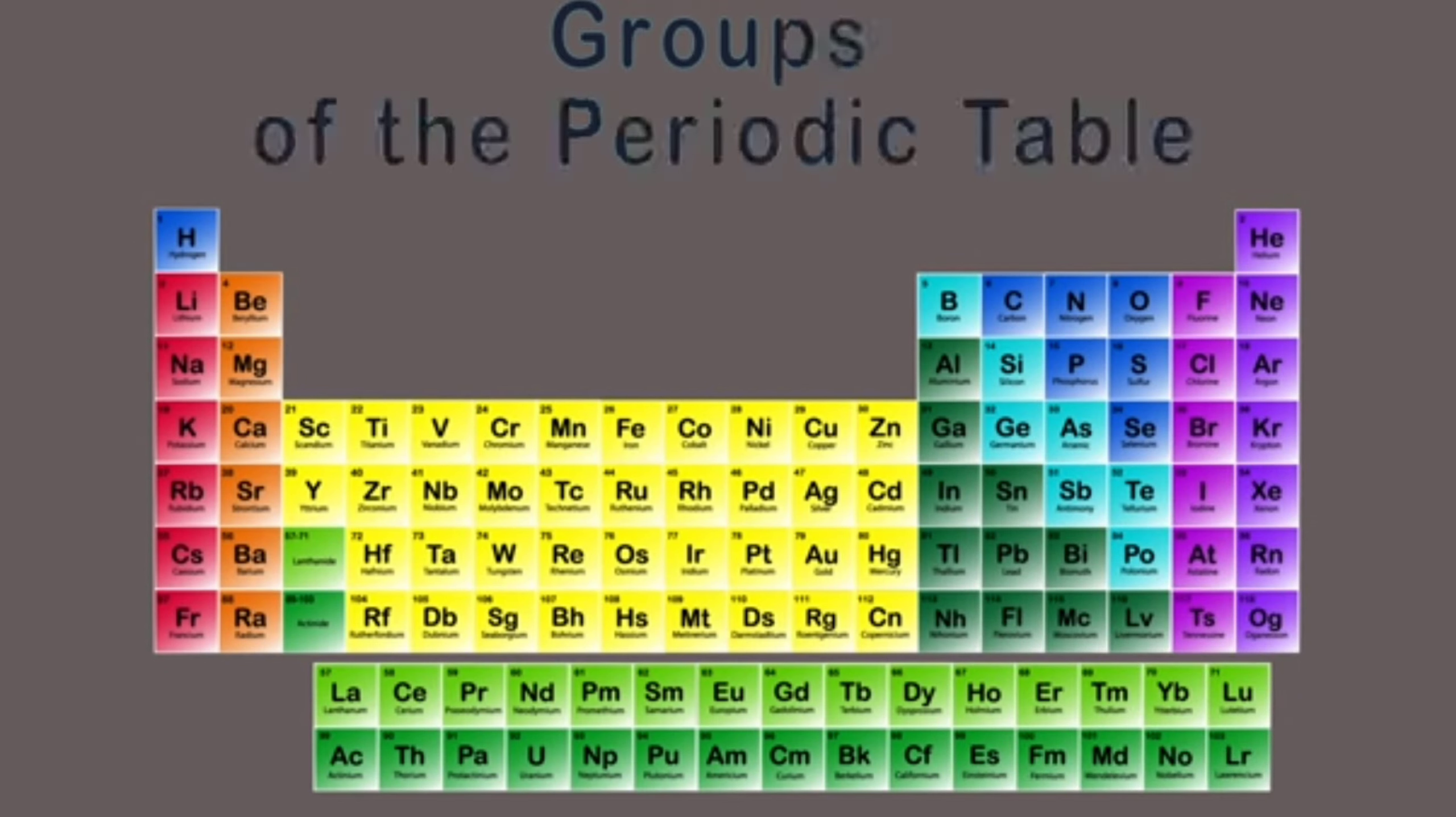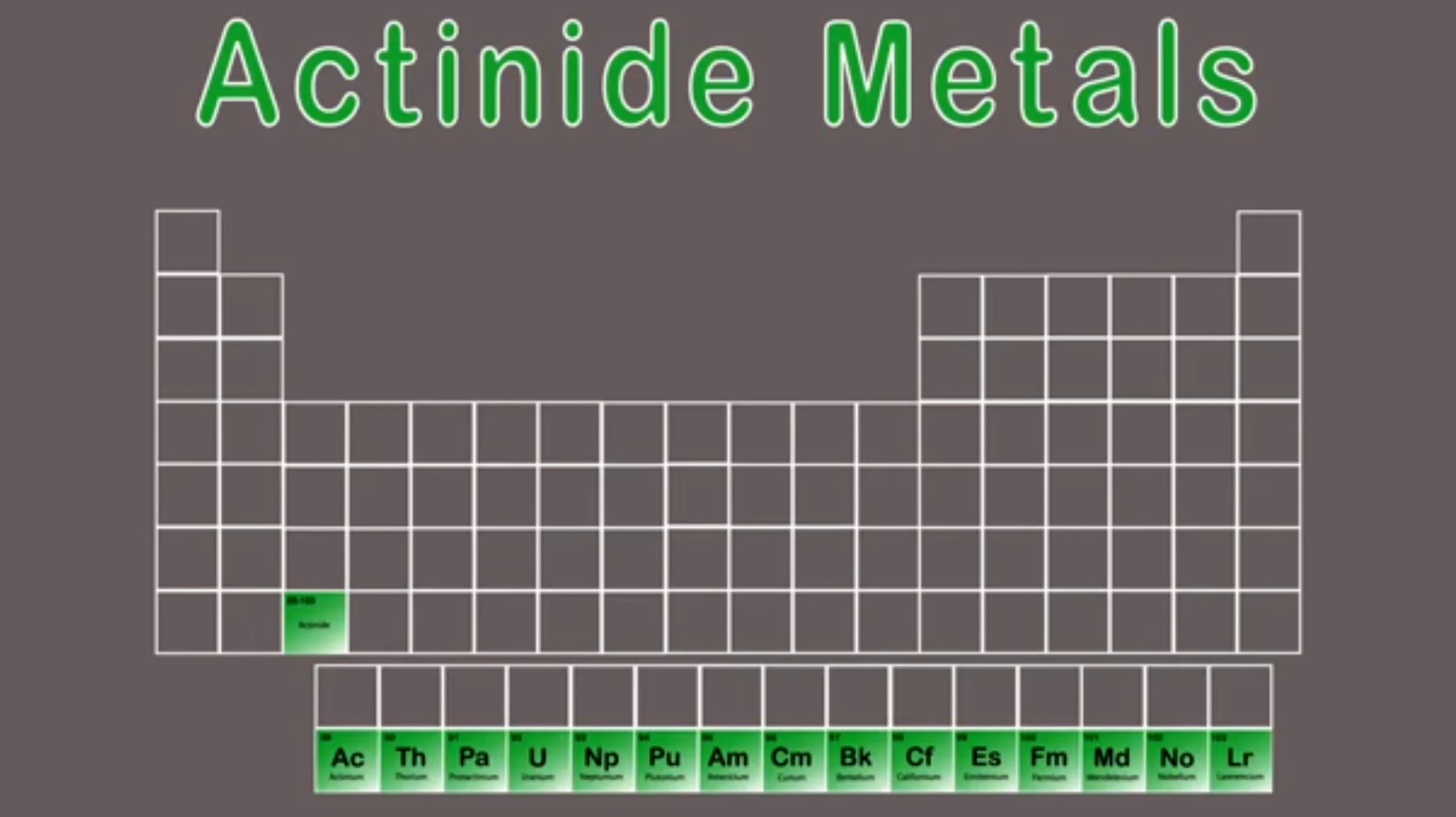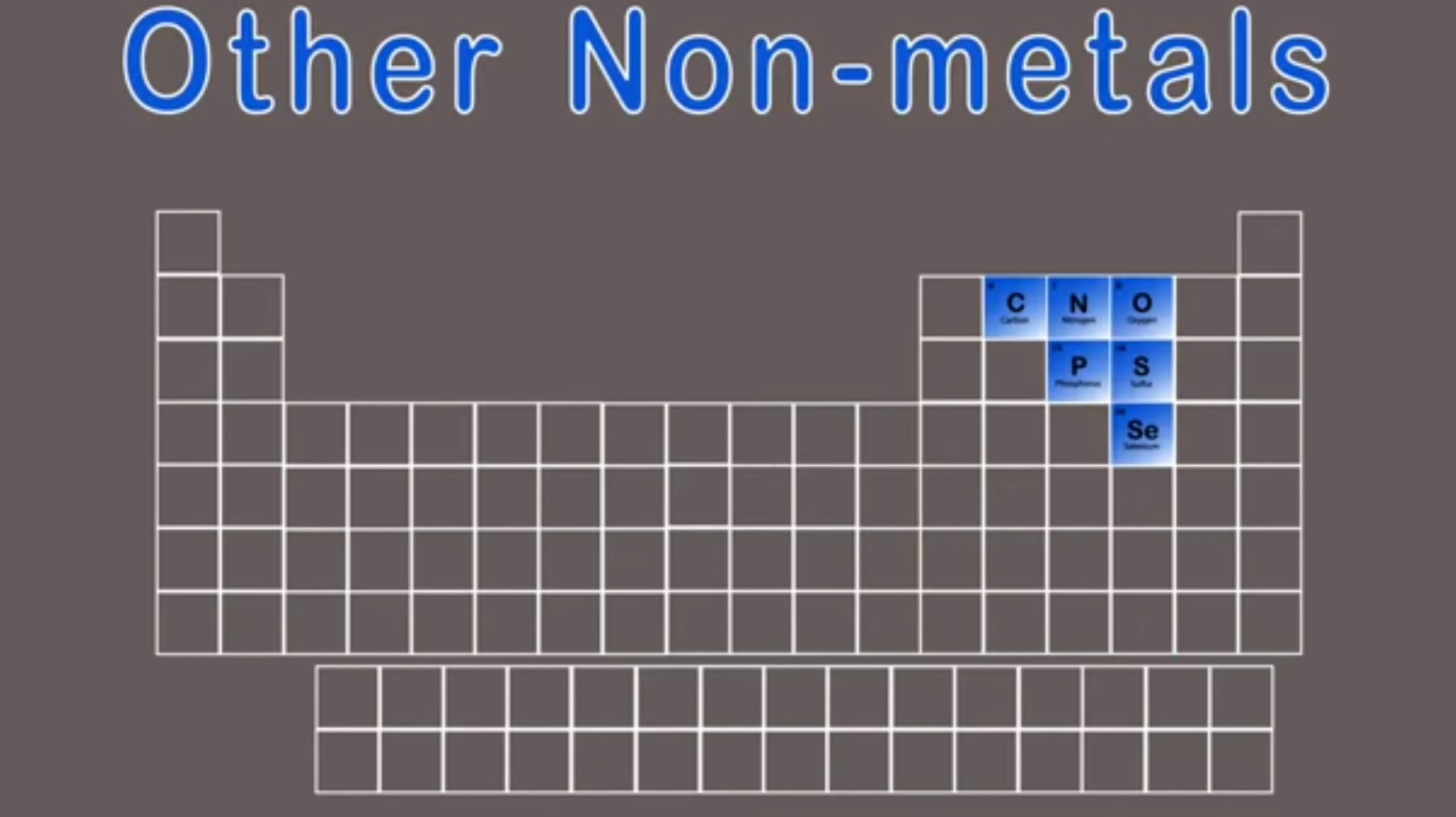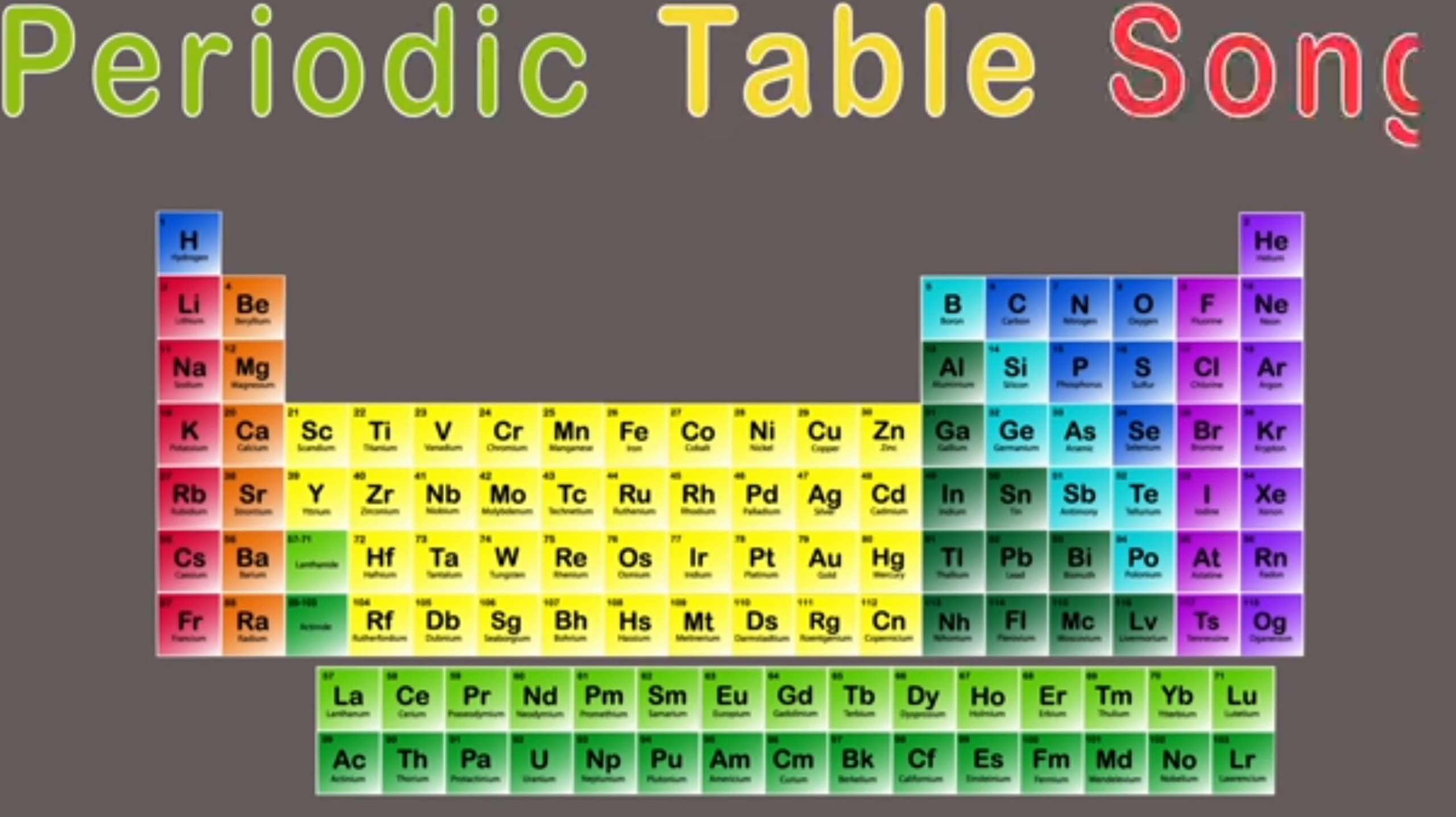Learn about these groups and sing if you are able. Alkaline metals and alkaline earth, the transition metals are here for what it's worth. Lanthanide and actinide metals you knew, post-transition metals and metalloids too. There's other non-metals and the halogens, and here is the noble gas elements. Here's a periodic table song.